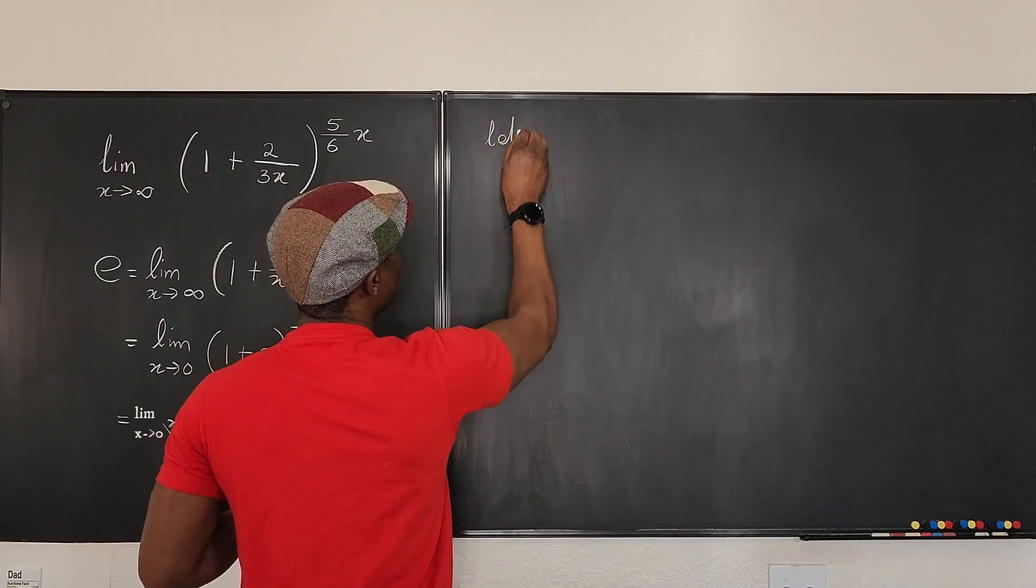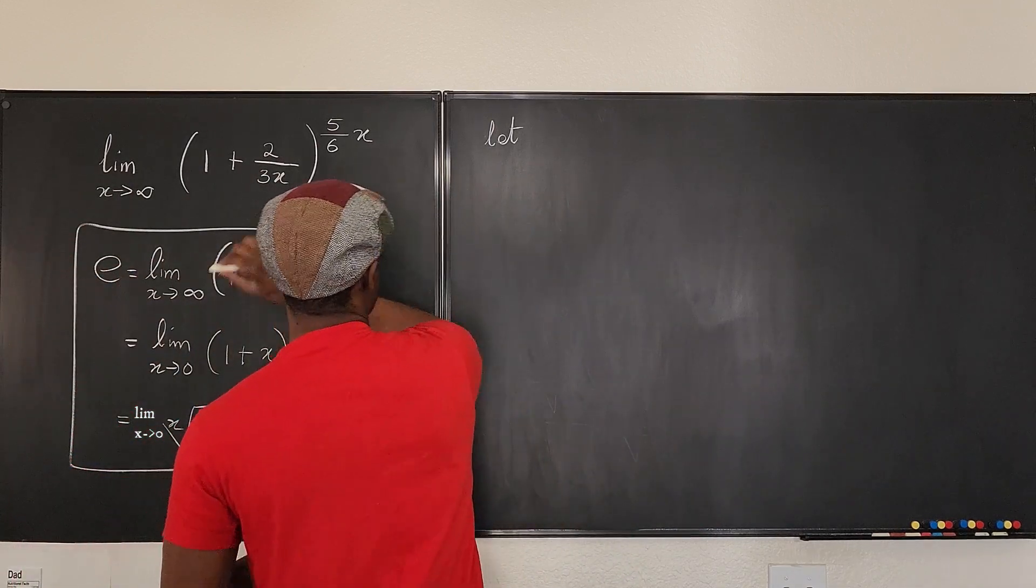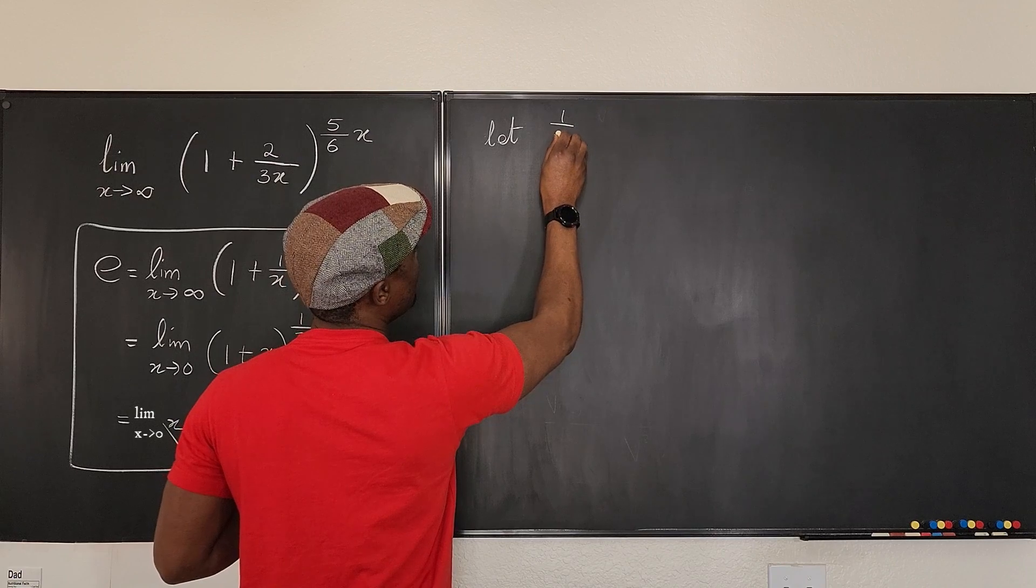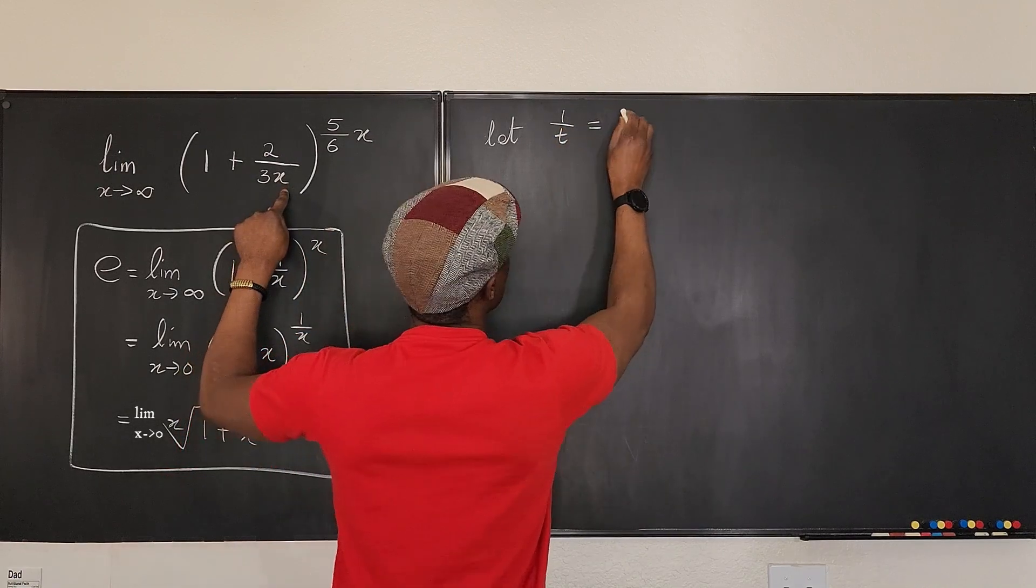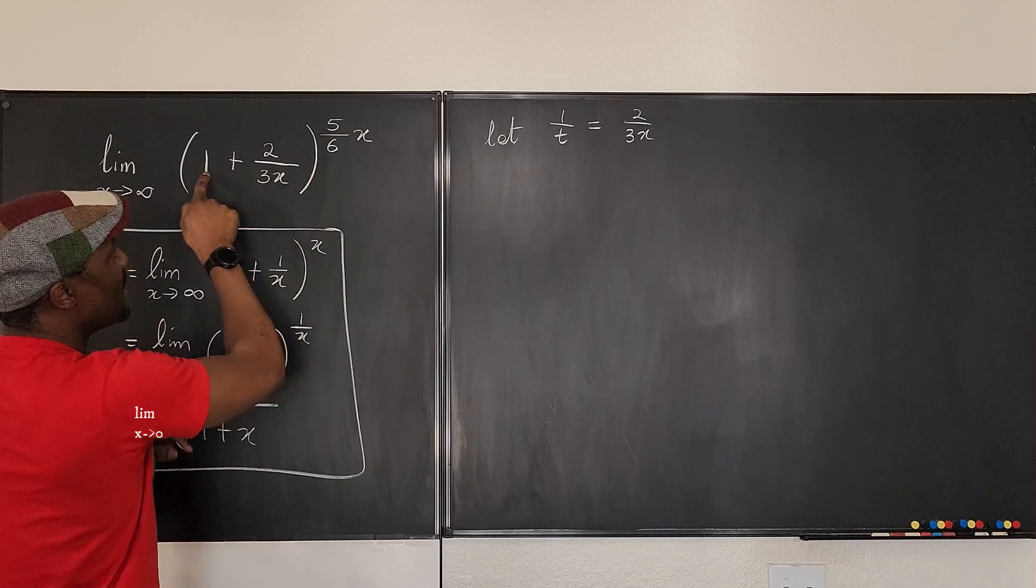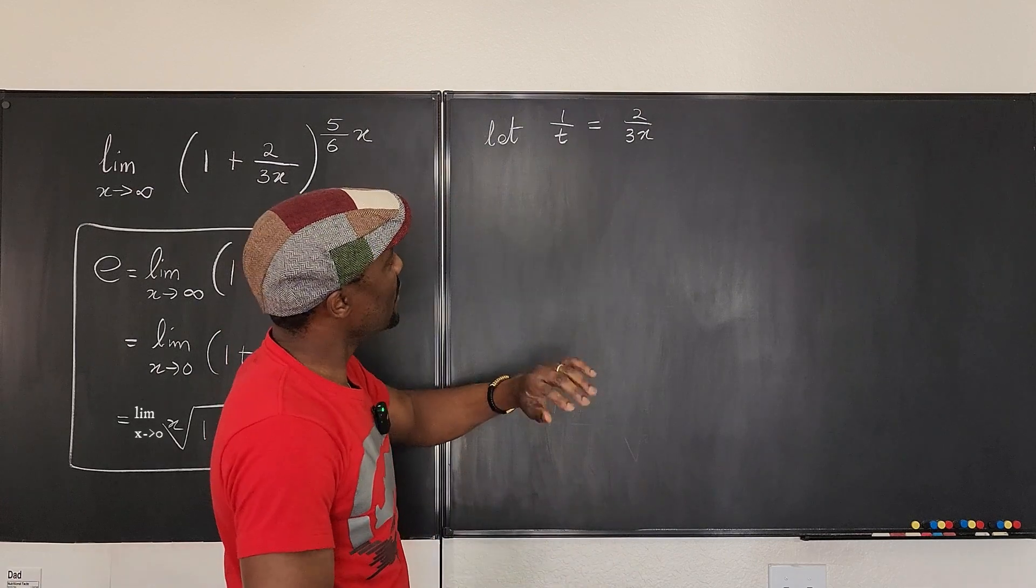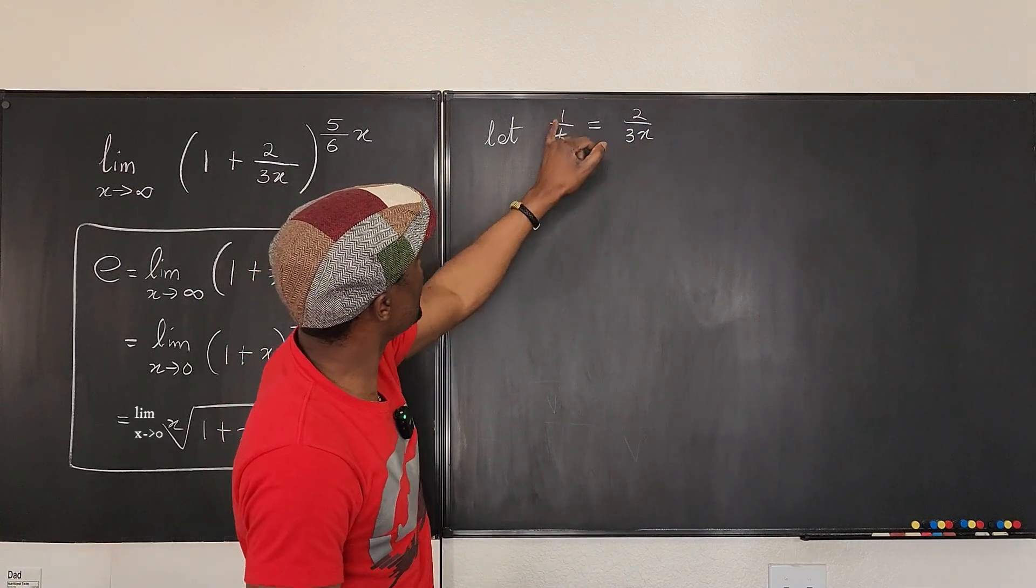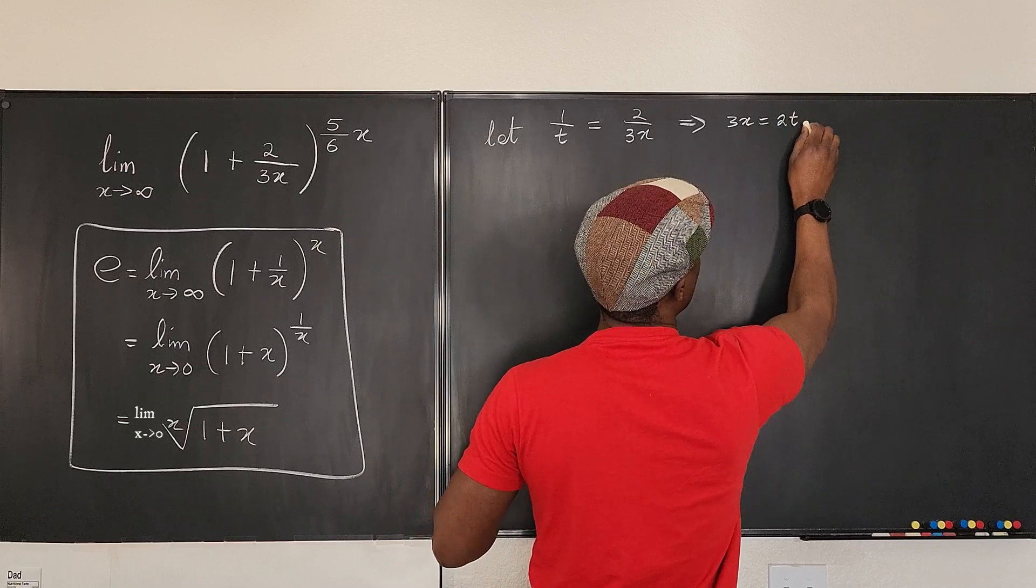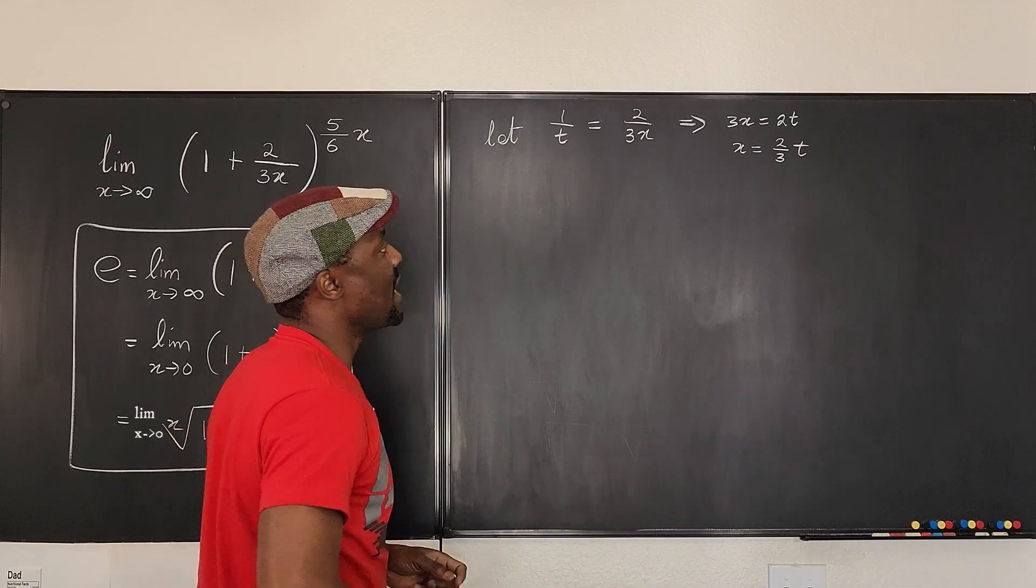So we can say, let... So in answering this question, let's put this in a box because we don't need this right now. We're going to say, let's pick a letter. Let's say 1 over t be equal to 2 over 3x. So it means our limits that we're about to calculate will become 1 plus 1 over t. So what do you think x is going to be? If this is our 1 over t, we can say this implies that 3x equals 2t so that x equals 2 over 3t. So that's what we have for x.